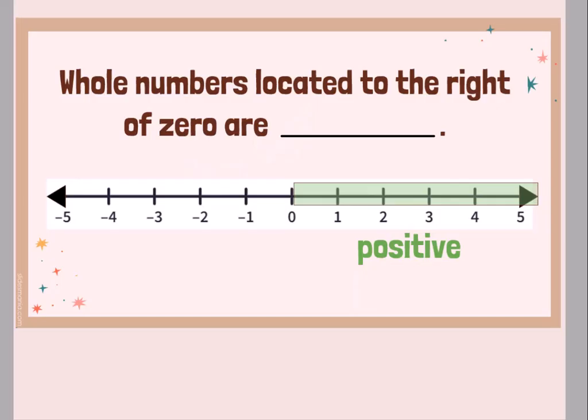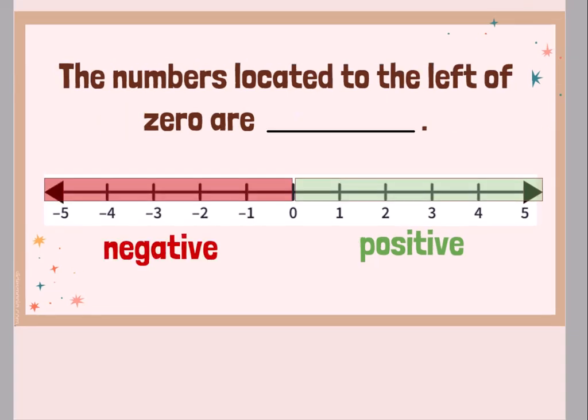Whole numbers located to the right of zero are our positive numbers. These are the numbers that we worked with all throughout elementary school. When we had a number line, we had zero, and then we had numbers that went to the right — they were positive, they were numbers that were greater than zero. This year, we're going to look at the whole number line, not just the numbers to the right, but also the numbers to the left of zero. These are called our negative numbers. Negative numbers are to the left of zero; they are the numbers that are less than zero.